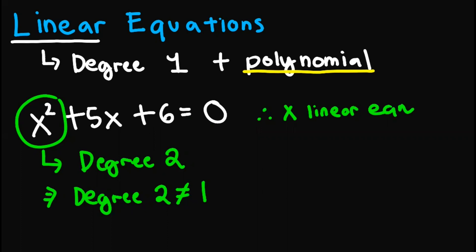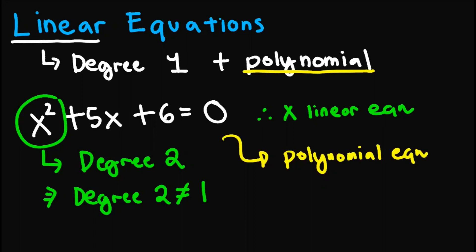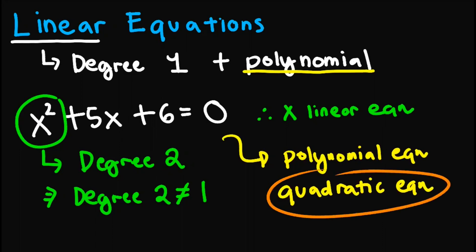Note that since this one is still a polynomial, this one is still a polynomial equation. But it is not linear since we call this one, if we have degree 2, we call that one a quadratic equation. We will also dive into this type of equation in this playlist.